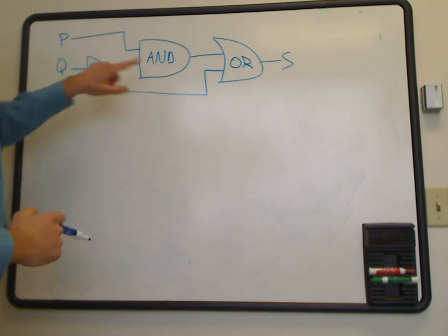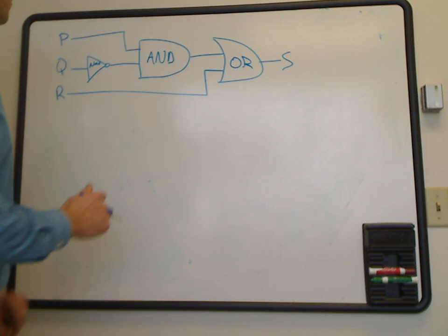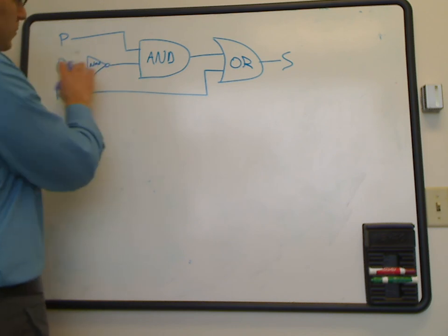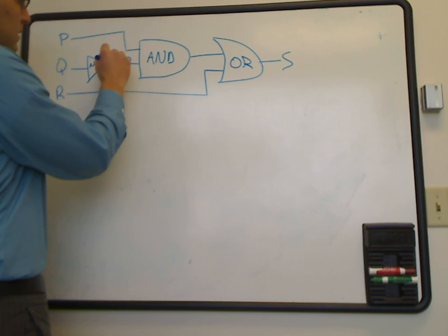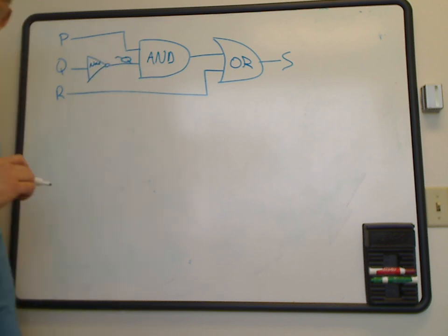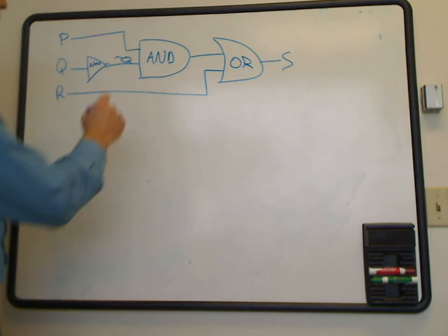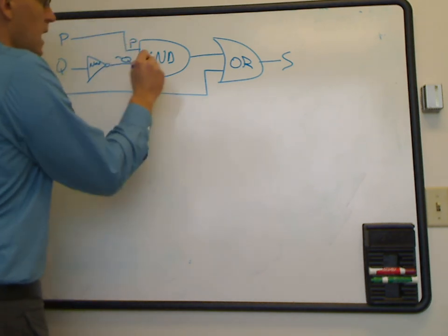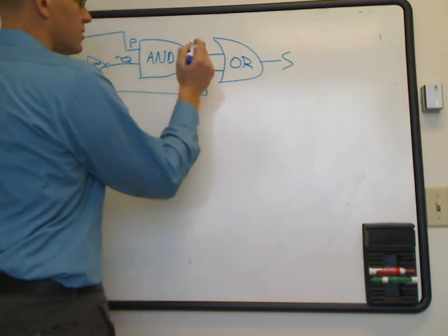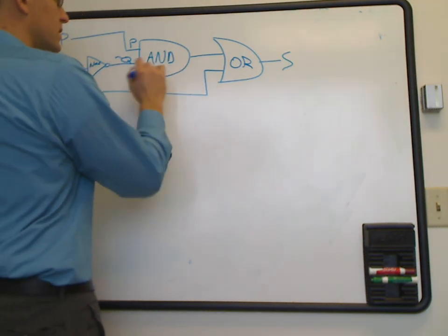Now, what's coming into our AND is we have a P input and we have a Q that's been NOTed. So when this Q goes through the NOT, it's equivalent to NOT Q. So I like to write that right on the input area. So what we really have here is we have P AND NOT Q, and that's actually the output of this AND block.